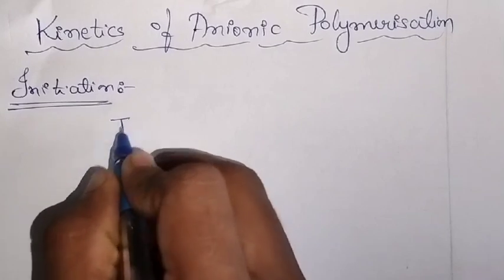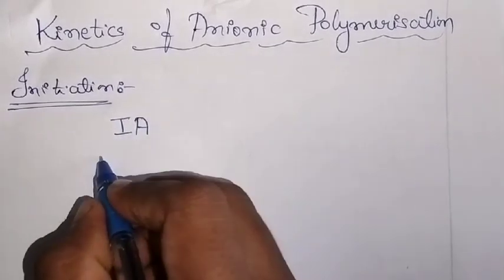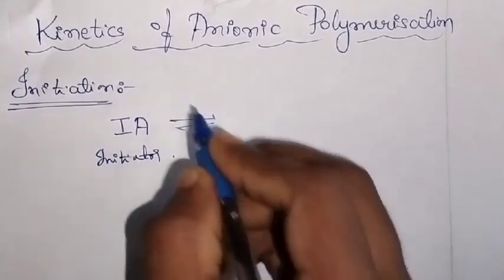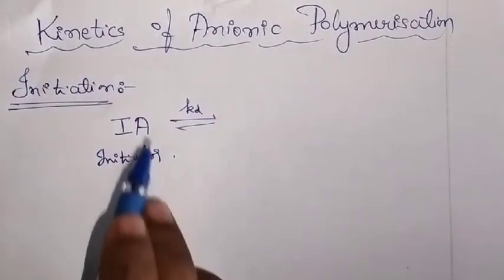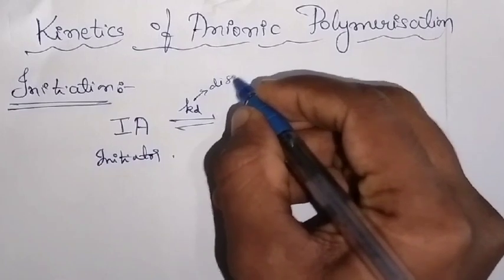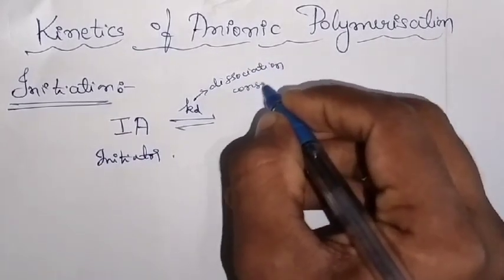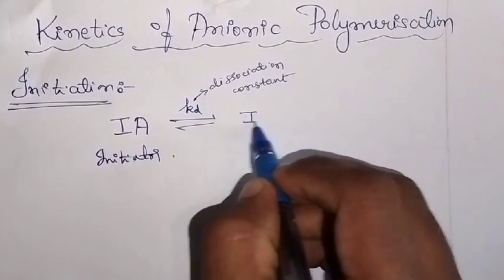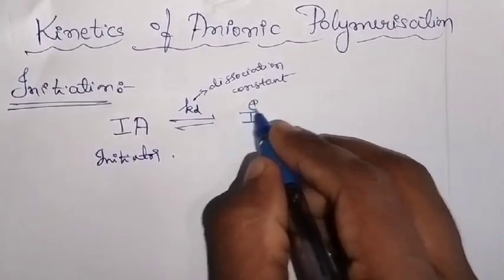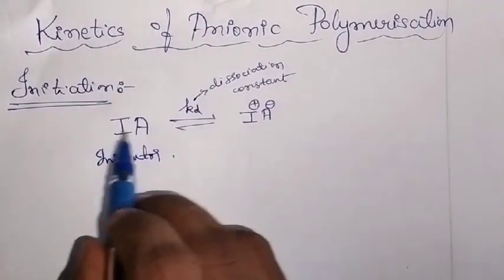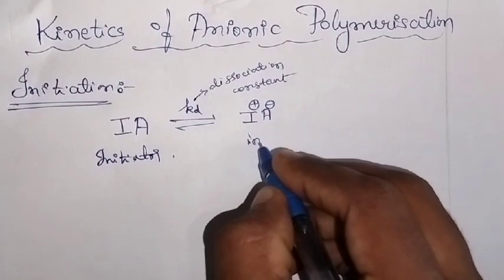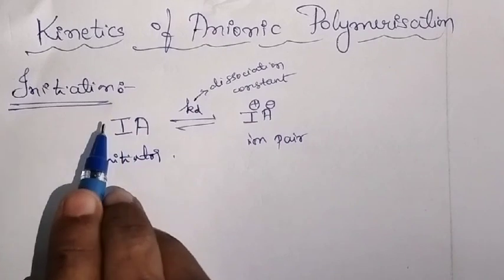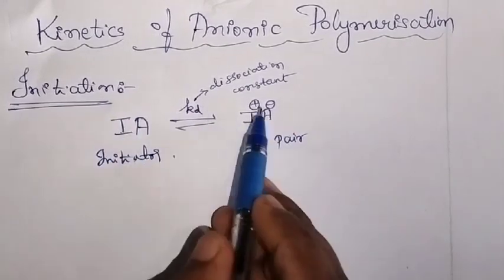First, you need to take the initiator — let me call this the initiator. Once you have an initiator, you need to dissociate it. KD means the dissociation constant. IA means it is an initiator. We need to dissociate it, meaning you will get I⁺ and A⁻ — the ion pairs. I took the initiator and dissociated it to get my ion pair, I⁺ and A⁻.